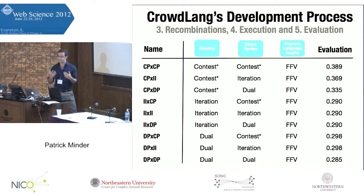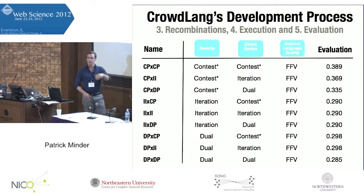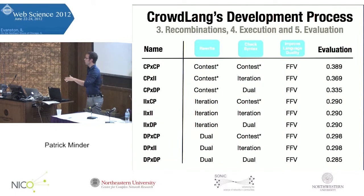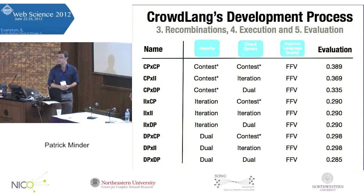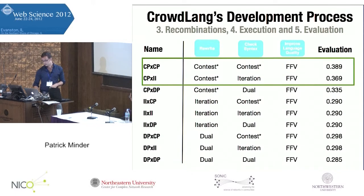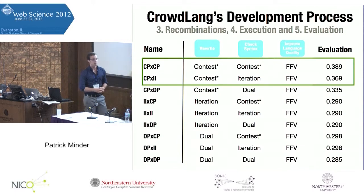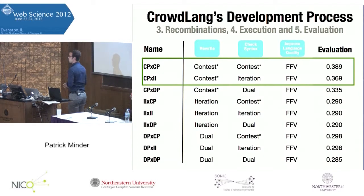What CrowdLang then does is produce a large number of possible problem-solving algorithms — all enumerated as you can see here — and evaluate them on test data. As a result, you will see that two algorithms clearly outperform all the others.